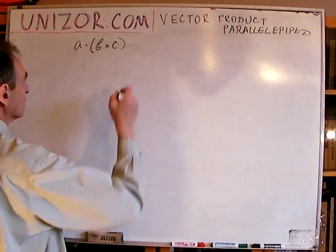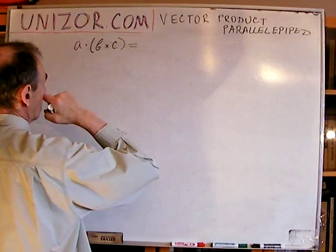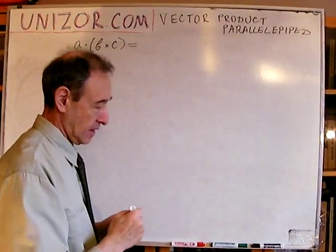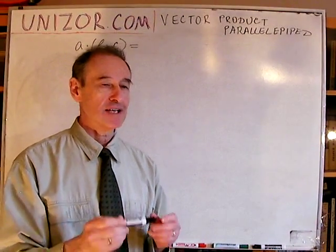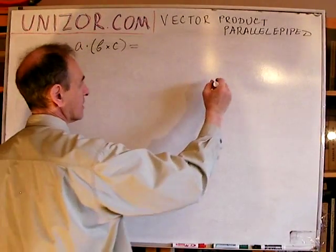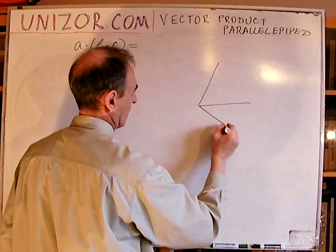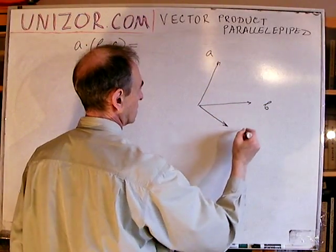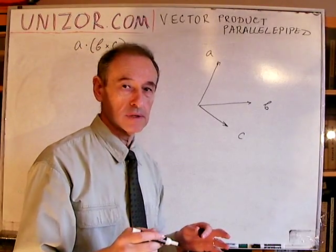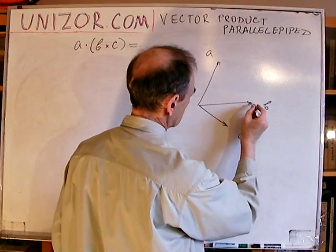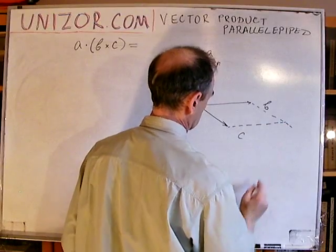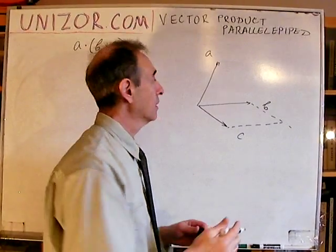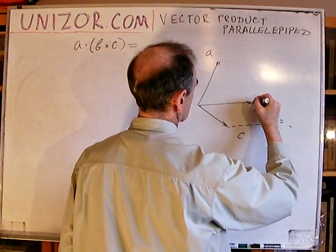The first thing I would like to prove is the following. Let me start from the second part of this lecture. If you have three vectors like this — let's say this is A, this is B, and this is C — you can always build a parallelogram based on B and C, something like this.